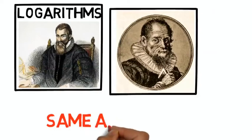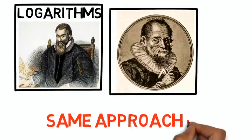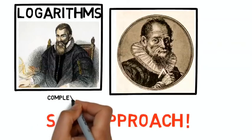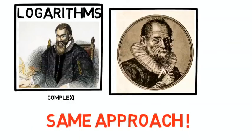John Napier and Joost Burgi had the same approach to the logarithms. But John Napier's logarithms were a little difficult to understand than the logarithms of Joost Burgi. And Joost Burgi's story is a little more interesting than John Napier's, so I want to talk about Joost Burgi.